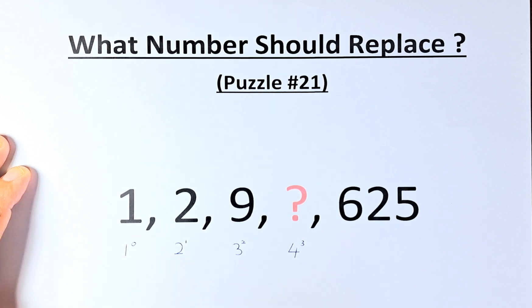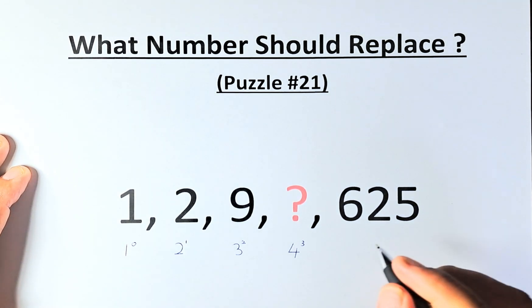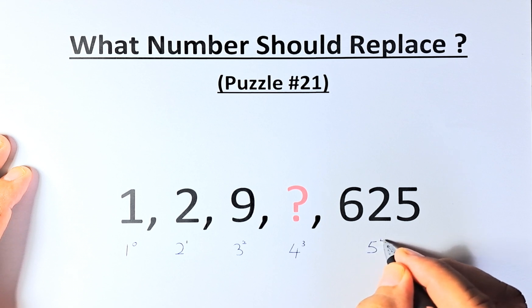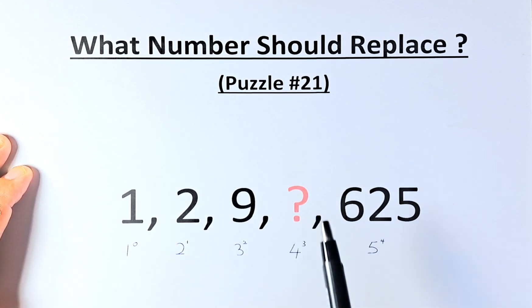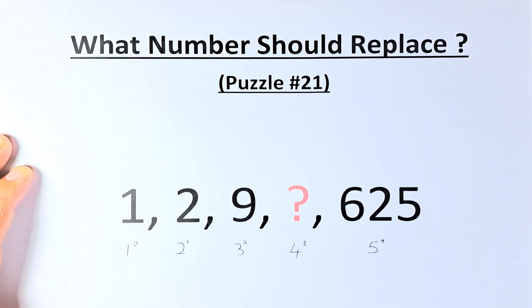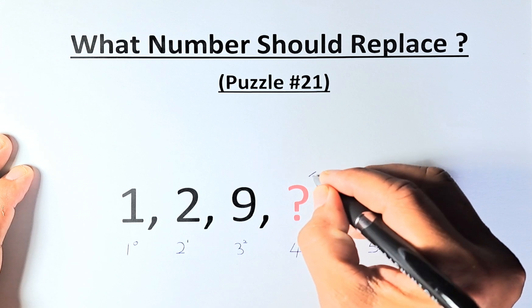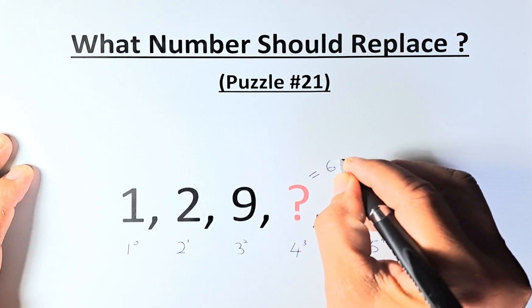And then we will confirm with 625. 625 is 5 to the power of 4. 5 times 5 times 5 times 5 is 625. So the question mark has to be 4 to the power of 3. So the question mark is equal to 64.